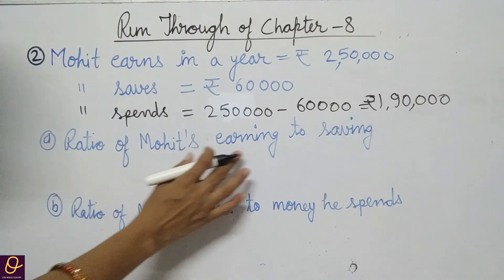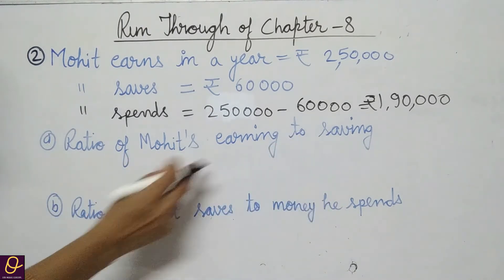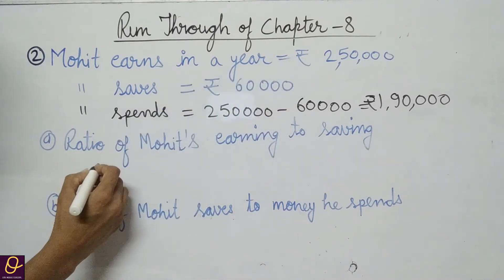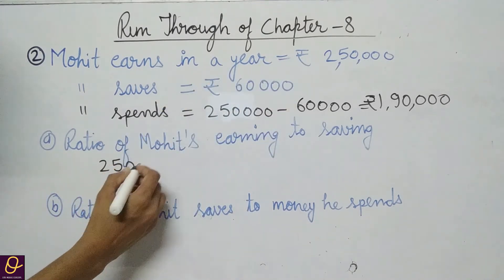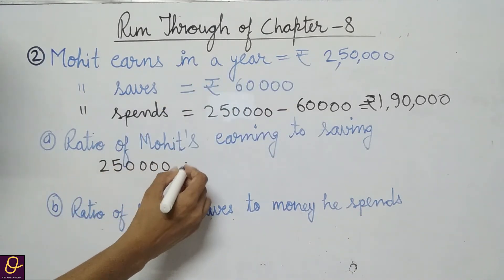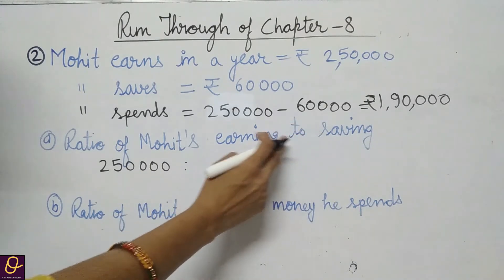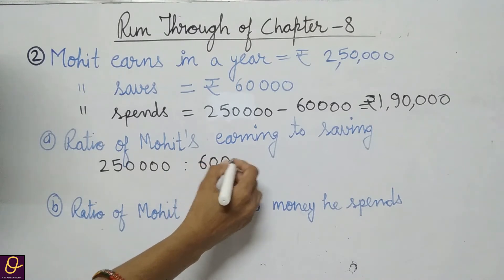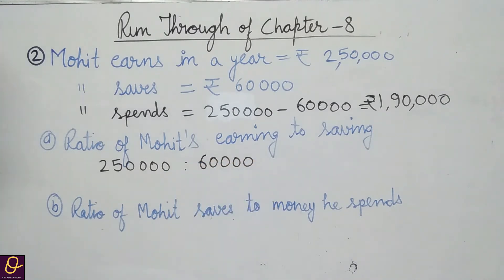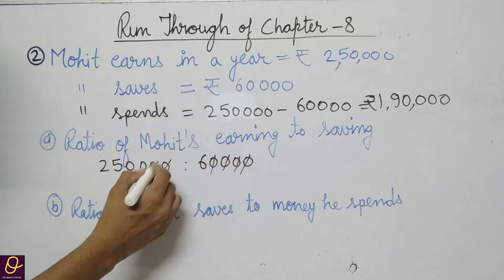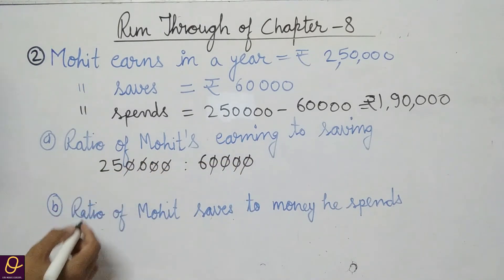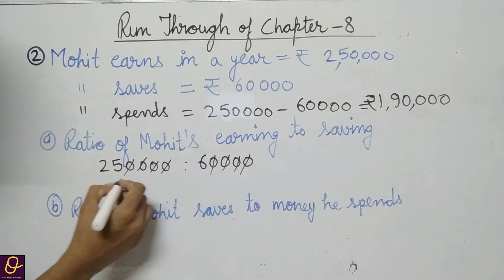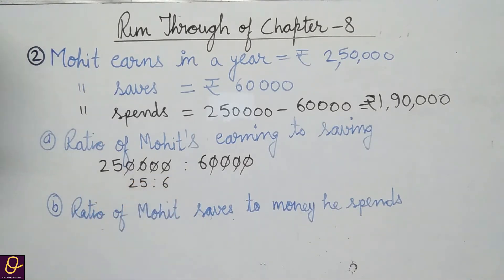Ratio of Mohit's earning to saving: first we note earning, that is 2,50,000, is to saving, that is 60,000. Cancelling the four zeros from both, we get 25 ratio 6.